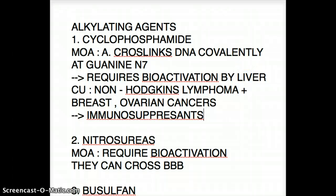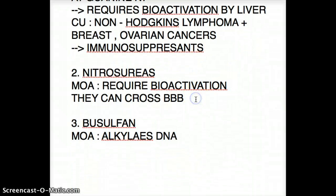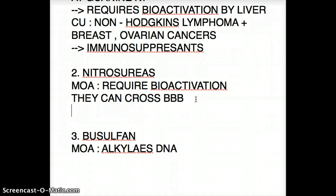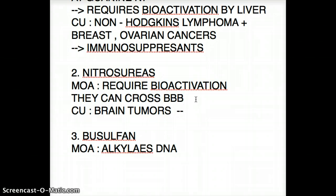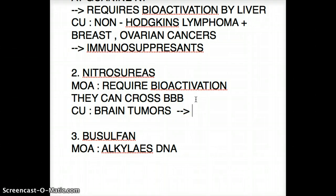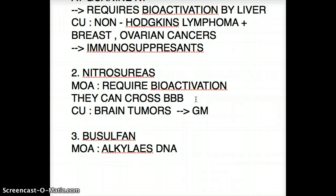Moving on to the clinical use of nitrous ureas — carmustine, lomustine, and streptozocin. These are used for brain tumors, which makes sense because they can cross the blood-brain barrier. We want a drug that can penetrate the blood-brain region, and the most dangerous of all brain tumors is glioblastoma multiforme, which is also treated with nitrous ureas.